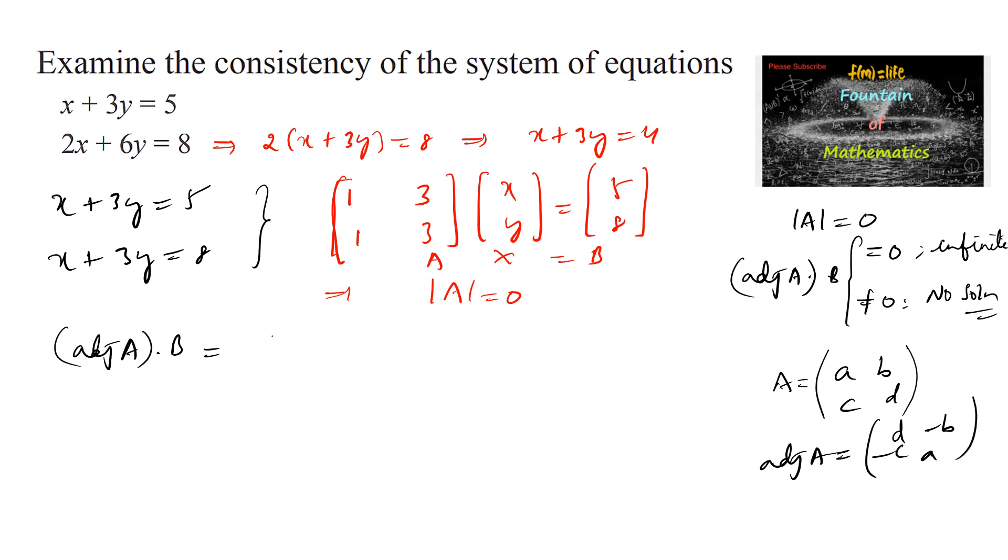So we can write 3 and 1 here, and negative 3 and negative 1, into the matrix b which is 5 and 8. This equals, through multiplication row with column, 3 times 5 is 15 minus 8 times 3 is 24.